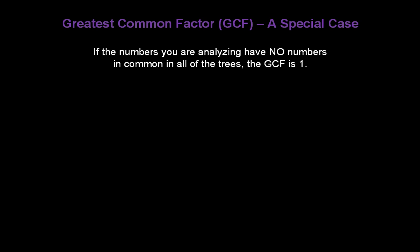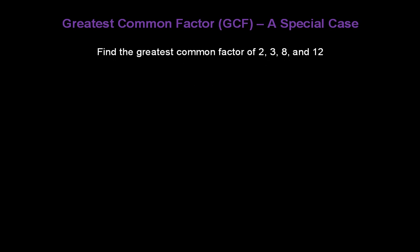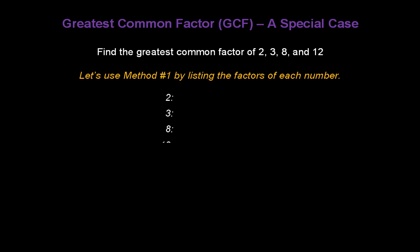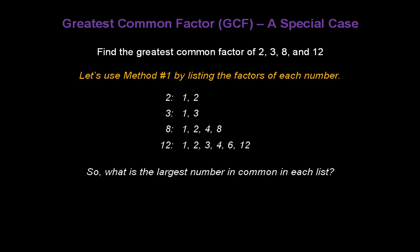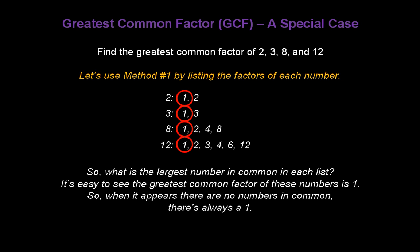Now, here's a special case for greatest common factor. If the numbers you're analyzing have no numbers in common in all of the trees, the greatest common factor, or GCF, is 1. And here's why. Let's find the greatest common factor of 2, 3, 8, and 12 using method number 1 by listing the factors of each number. The factors of 2 are 1 and 2. The factors of 3 are 1 and 3. The factors of 8 are 1, 2, 4, and 8. And the factors of 12 are 1, 2, 3, 4, 6, and 12. What's the largest number in common in each list? It's easy to see it's just 1. So when it appears there are no numbers in common, remember, there's always a 1.